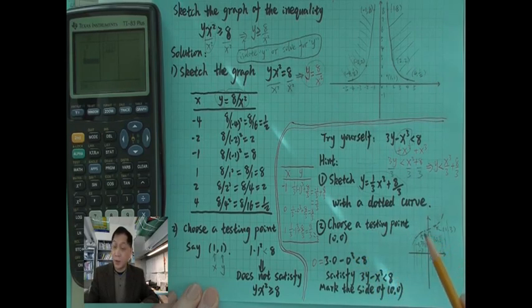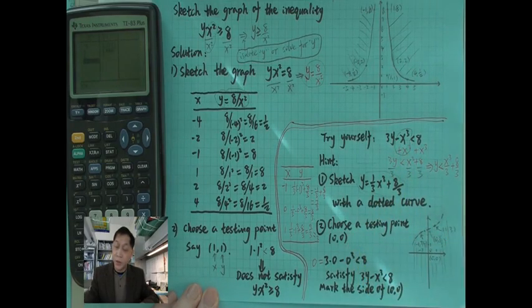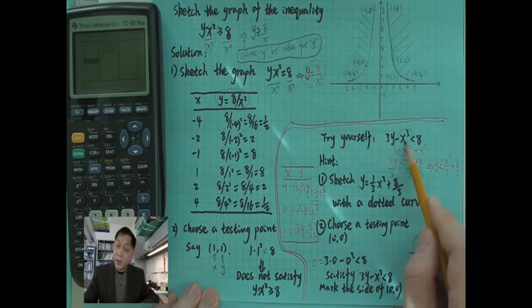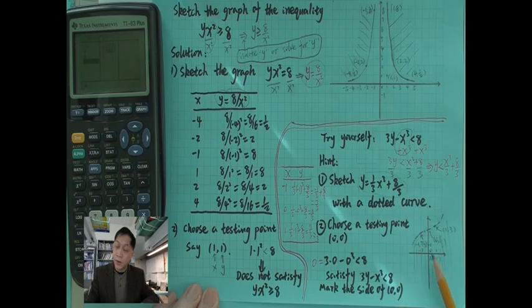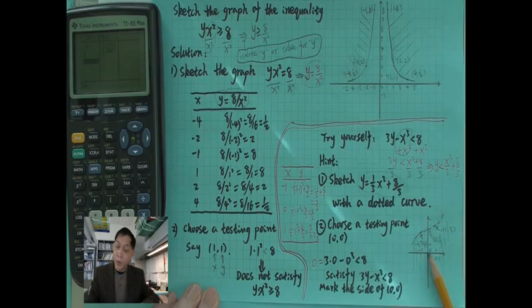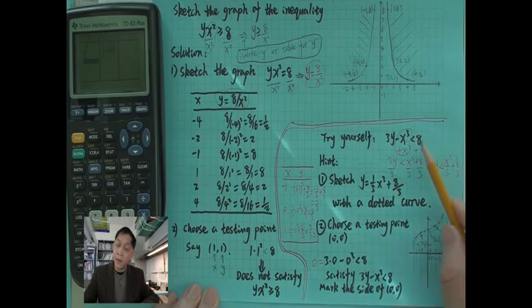Step 1 is that you want to sketch a curve with a dotted curve. Step 2, choose a testing point. If you plug in 0, 0 here, 0, 0 all the time is the convenient point. 3 times 0 minus 0 cubed, it's going to satisfy this inequality. So if it satisfies for one point, the rest of them are going to be okay on this side.